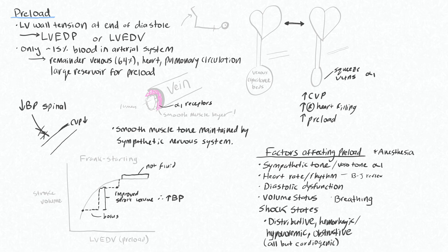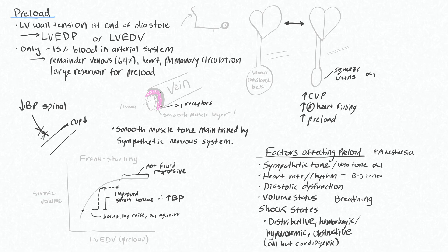At the flat part of the curve you're not fluid responsive at all — increasing preload any further does not give better stroke volume, so it doesn't make sense to bolus this patient anymore. This leg raise technique is quite useful for patients with hypotension following induction of anesthetic or a spinal, because these people will be low on the Frank-Starling curve. You increase blood return to the heart, raise preload, and increase stroke volume — whether via a bolus, leg raise, or an alpha-1 agonist to squeeze the venous capacitance beds.